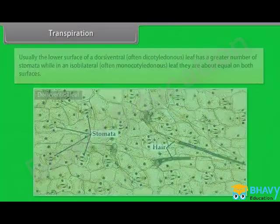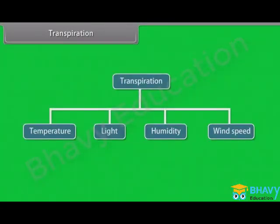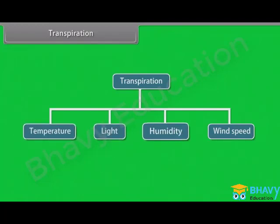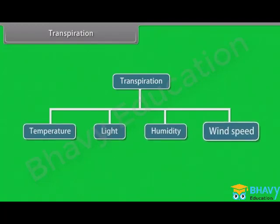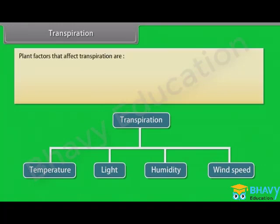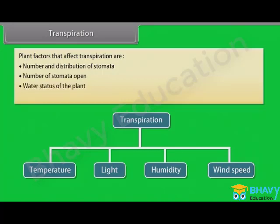When the guard cells lose turgor due to water loss or water stress, the elastic inner walls regain their original shape, the guard cells become flaccid, and the stoma closes. Usually, the lower surface of a dorsiventral or dicotyledonous leaf has a greater number of stomata, while in an isobilateral or monocotyledonous leaf they are about equal on both surfaces. Transpiration is affected by several external factors like temperature, light, humidity, and wind speed. Plant factors include number and distribution of stomata, number of stomata open, water status of the plant, and canopy structure.